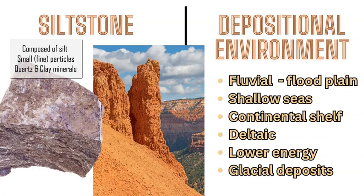Siltstone is similar to sandstone — silt is a little smaller in grain size and forms in similar locations including the continental shelf, shallow inland seas, and fluvial deltaic environments, but in low energy settings. It also includes glacial deposits.